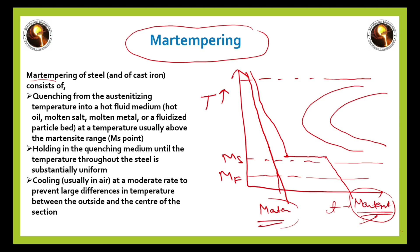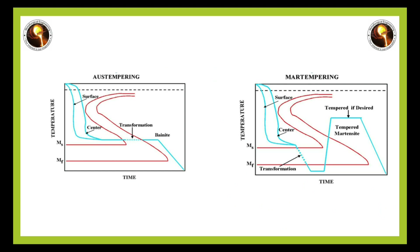To summarize the difference: in austempering, heat the steel above the critical temperature, hold, then rapidly cool into the bainitic region and hold — giving a fully bainitic structure. In martempering, heat above the critical temperature, hold, then rapidly cool to just above the Ms temperature, hold, then air cool — giving a martensite structure. Further tempering can then produce tempered martensite.